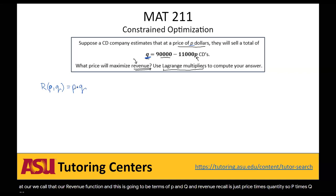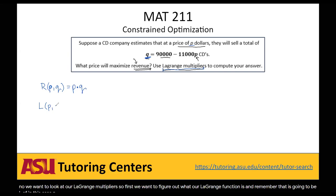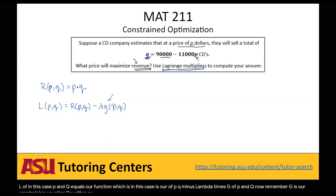Next we want to look at our Lagrange multipliers. We need to figure out what our Lagrange function is. That is L of P and Q equals our function R(P,Q) minus lambda times G(P,Q). Remember, G is our constraining equation rewritten so that it equals zero. Our constraining equation in this case is Q equals 90,000 minus 11,000P.